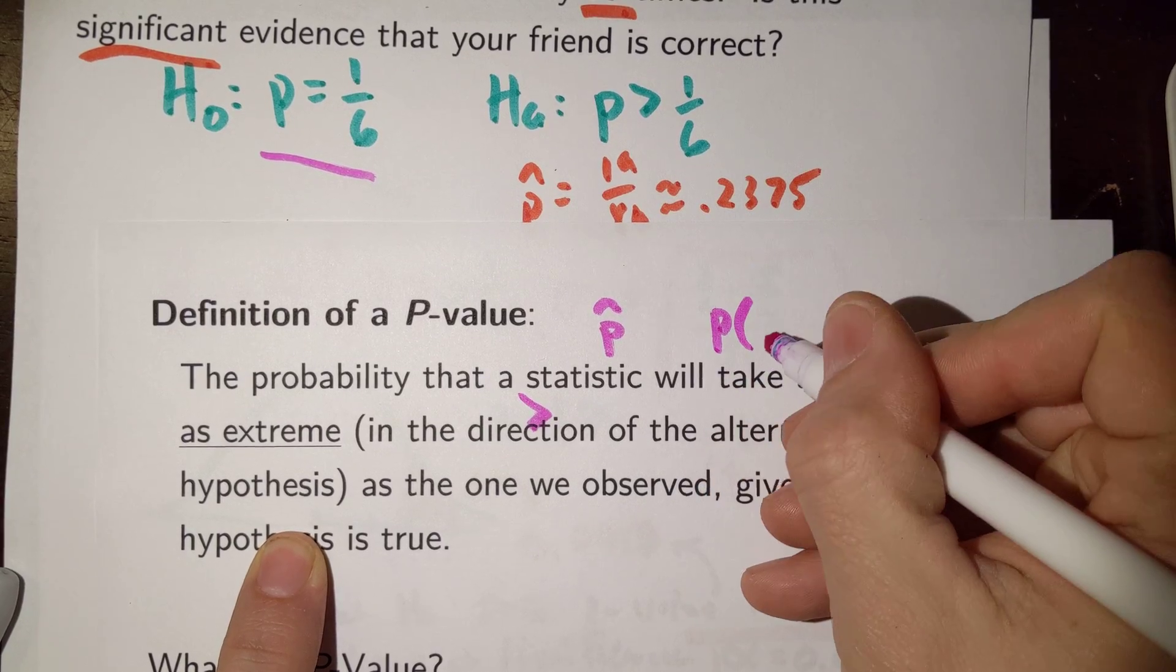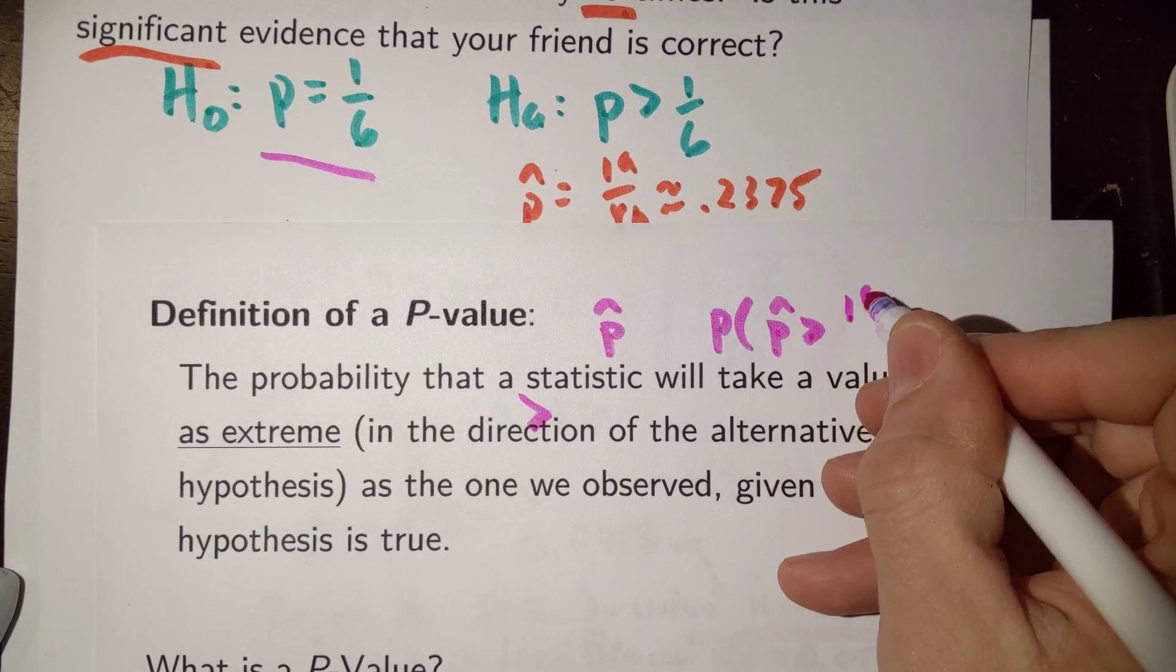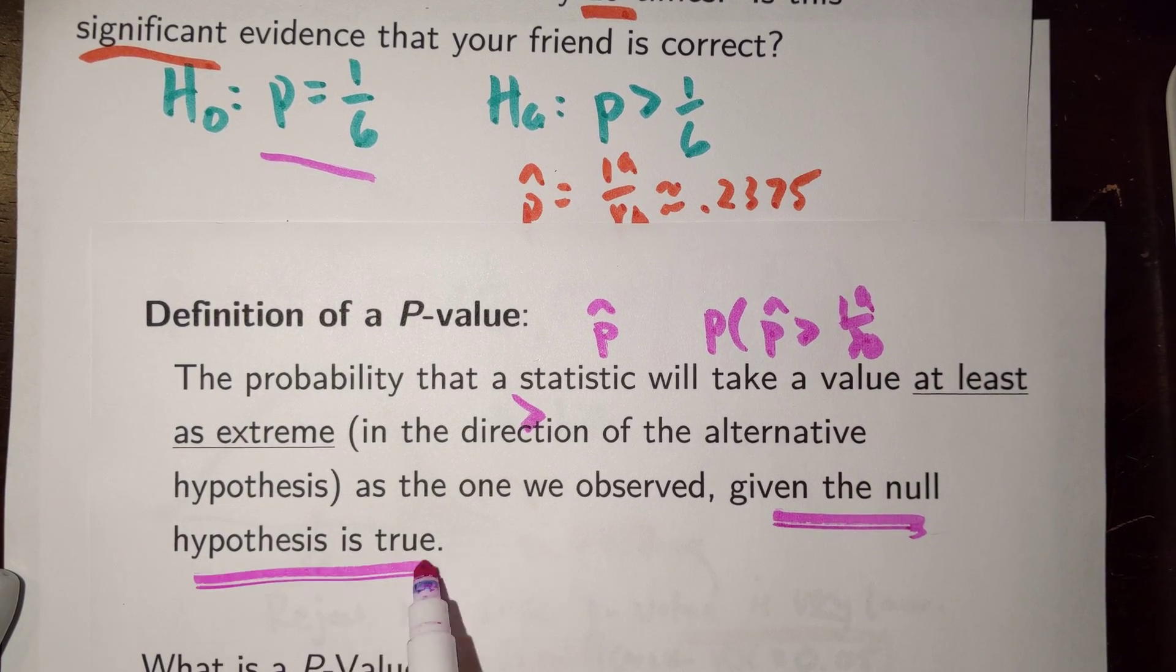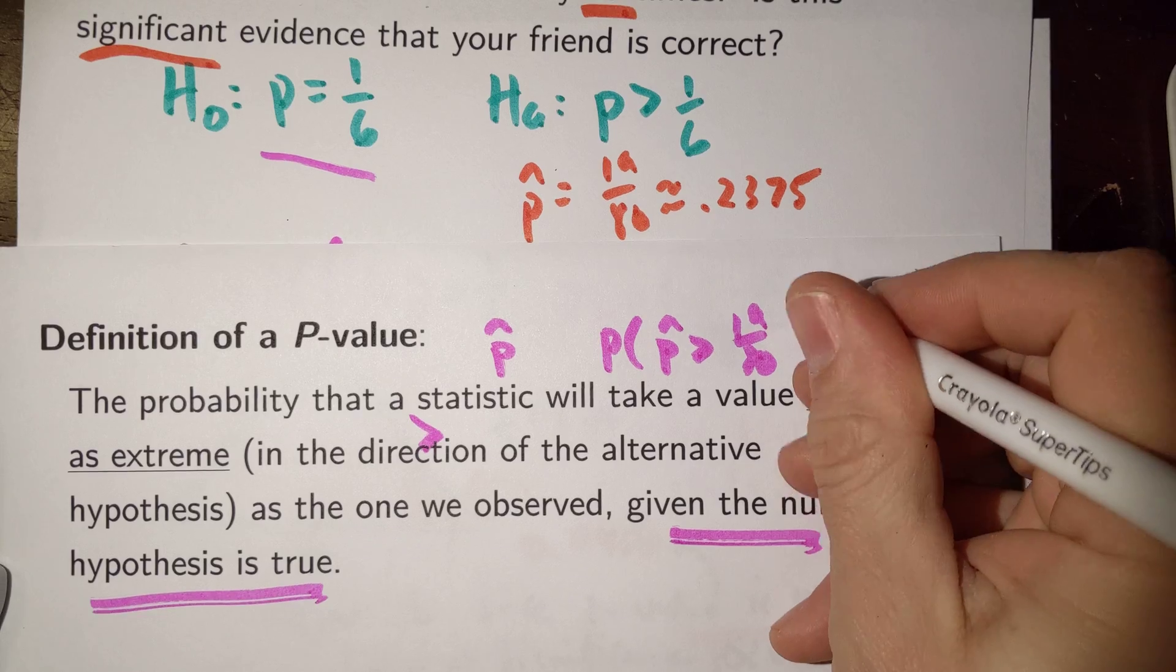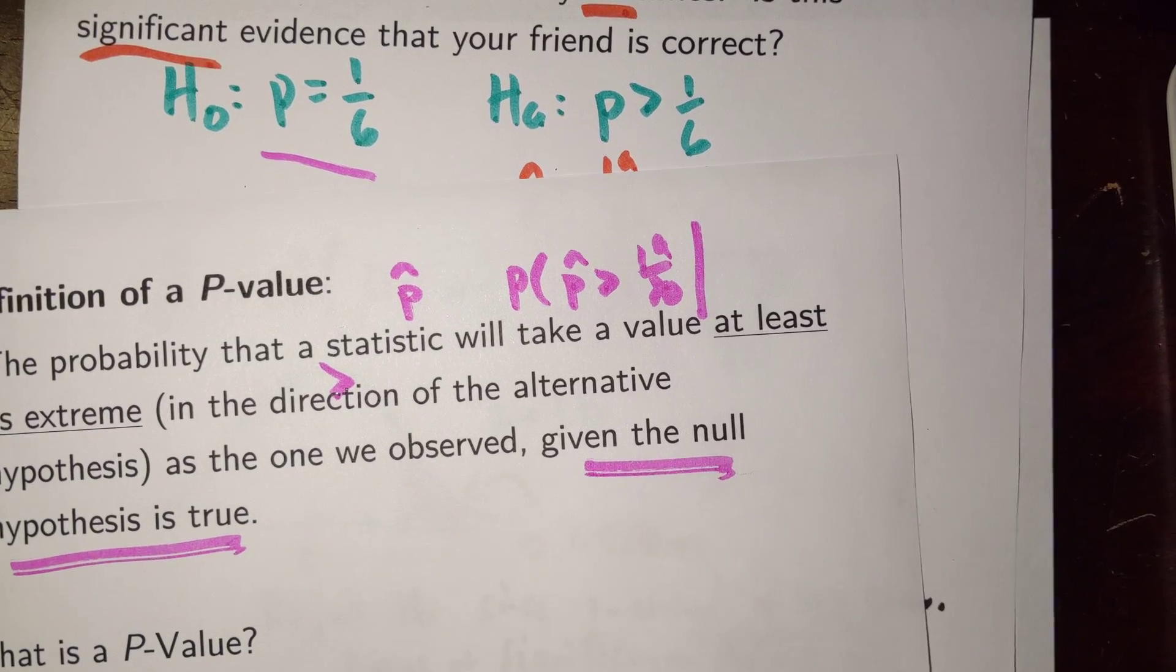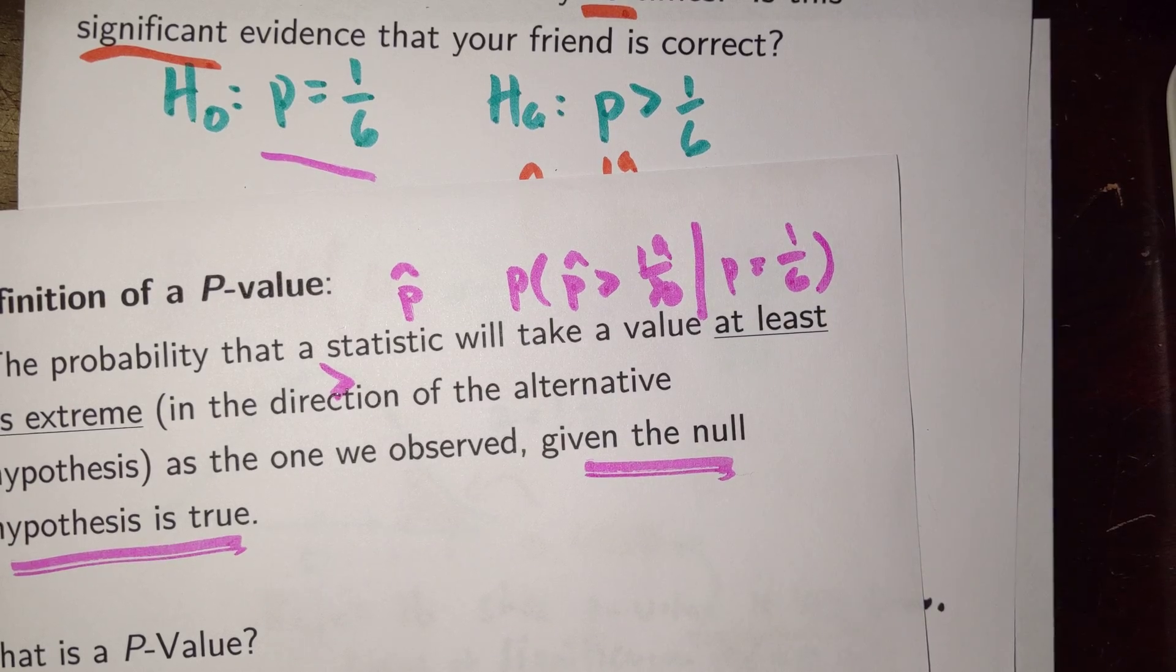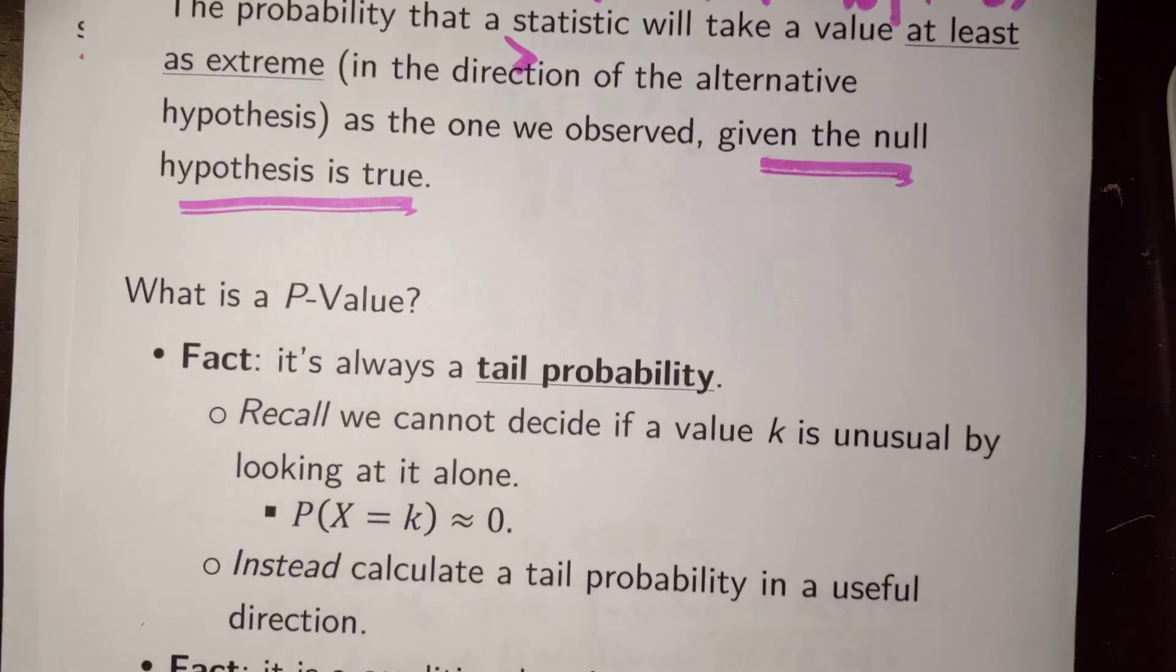And we looked at things that were at least as extreme as that p-hat. So, we calculated the probability that p-hat would be greater than 19/80. But notice that it was given the null hypothesis is true. So, this was a conditional probability, given that p actually is one-sixth. And so, those are those key ideas.